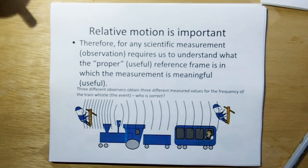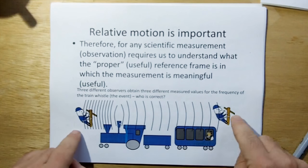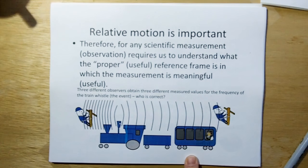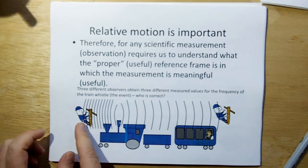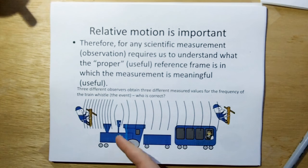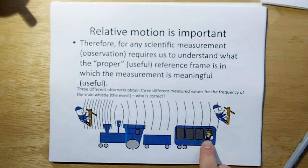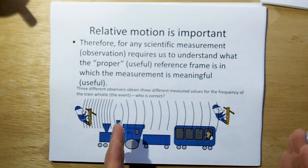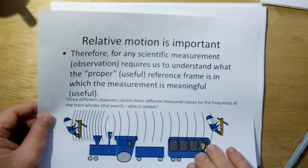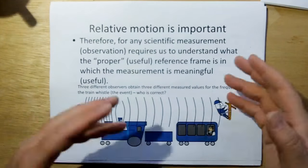So the reference frame is important. Any scientific measurement or observation requires us to understand what the proper or useful reference frame is — like land speed, airspeed, or hull dynamics. Consider this example: you've got a train going down the track with three observers — a lineman in front, a lineman behind, and the conductor in one of the cars. From the Doppler effect, the lineman in front experiences an increased frequency of the whistle, the lineman behind hears a lowered frequency, and the conductor, moving with the train, notices no difference whether the train is in motion or standing still.